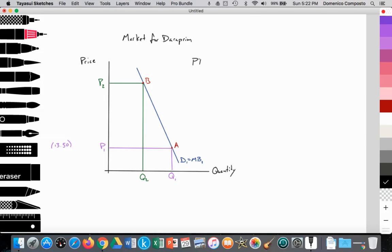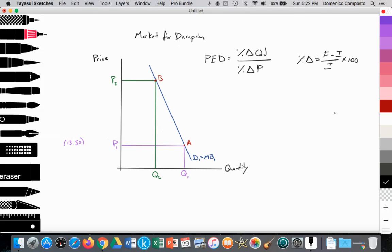is PED equals the percent change in quantity demanded divided by the percent change in price. And percent change is equal to the final value minus the initial value divided by the initial times 100. So let's use the values that we have from this article. We're going to make up the quantity because we don't know what the quantity is.